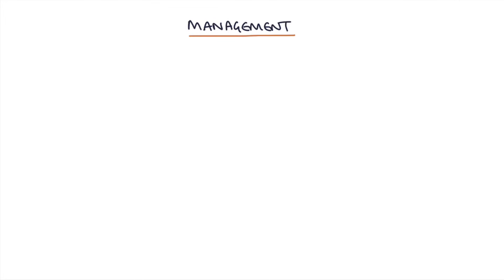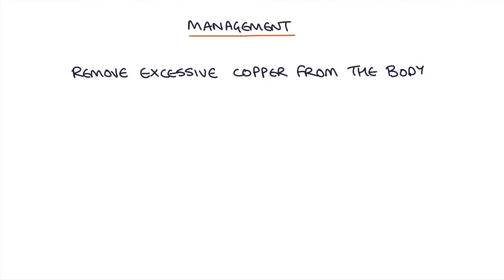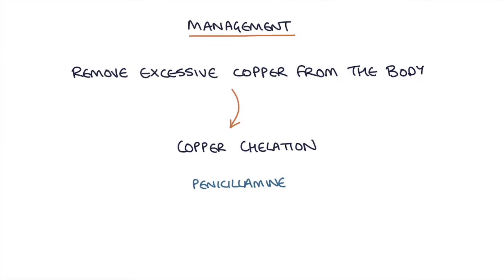To manage Wilson's disease, you need to remove that excessive copper from the body. This is done using copper chelation, and there are two main medications used: penicillamine and trientine.